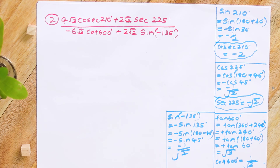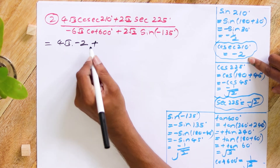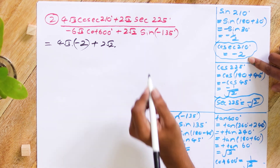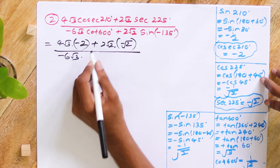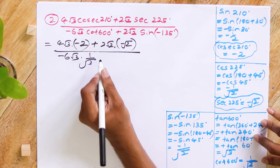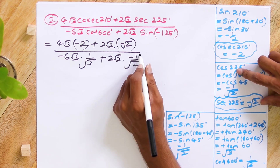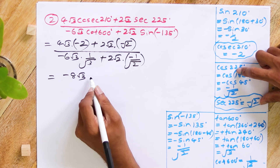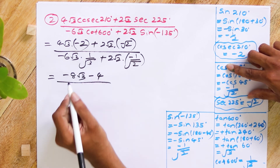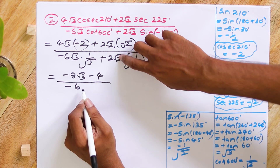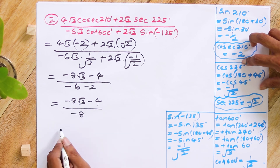The difficult part is over. Now we substitute: 4√3 and cosec 210° is -2, plus 2√2 into sec 225° which is -√2, minus 6√2 over -6√3 into cot 600° which is 1/√3, plus 2√2 into sin(-135°) which is -1/√2. This equals -8√3 minus (√2 × √2 × √2) — so 2 minus 2, then minus 2 times 2 is minus 4.